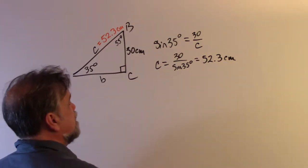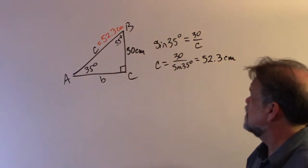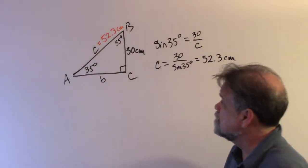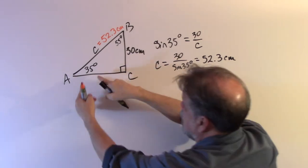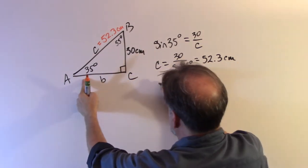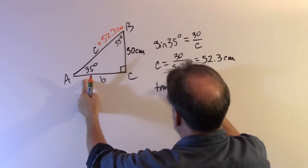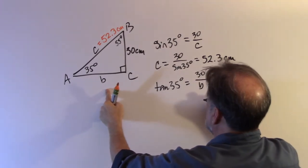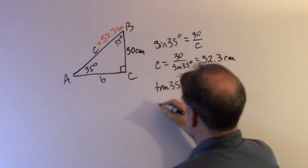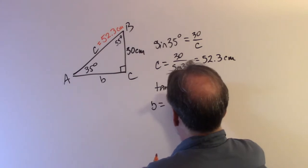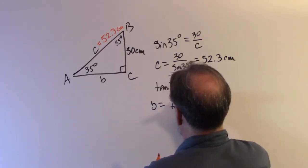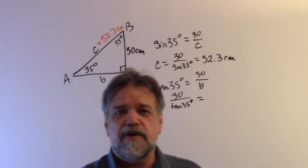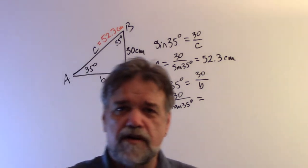What about b? I'll use the tangent of 35 degrees. Tangent is opposite over adjacent, so tangent of 35 equals 30 over b. Using the same process, b equals 30 divided by the tangent of 35. Using my calculator, that gives me 42.8 centimeters.